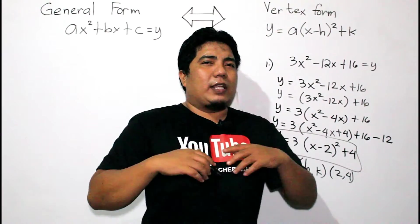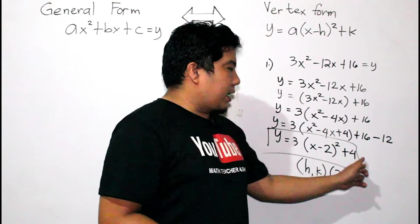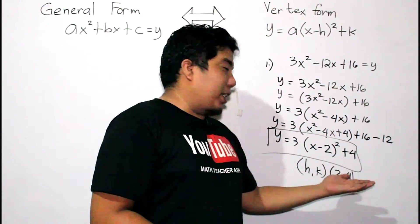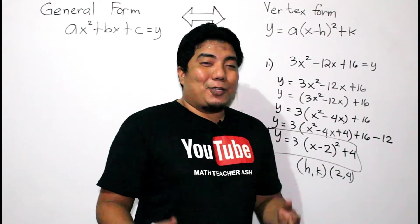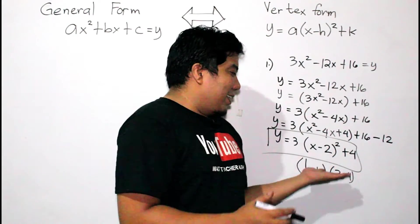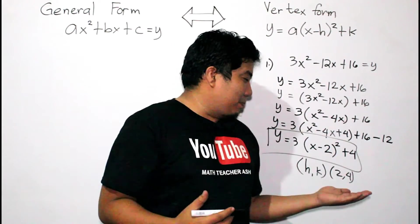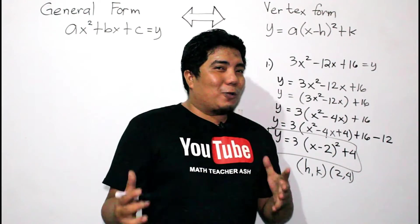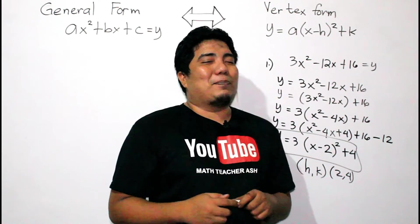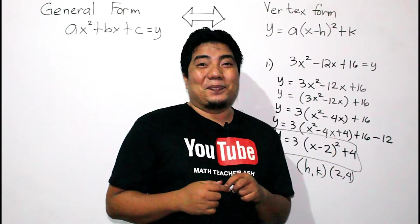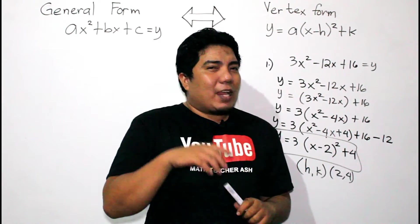The vertex of the parabola is at (H, K), which is positive 2, positive 4. Note: whatever sign appears in the factored form will be opposite for your H value — if it shows minus 2, then H is positive 2; if it shows plus 2, then H is negative 2. Whatever K is written stays the same. This is the essence of vertex form — by just looking at it, you can identify the vertex of the parabola.